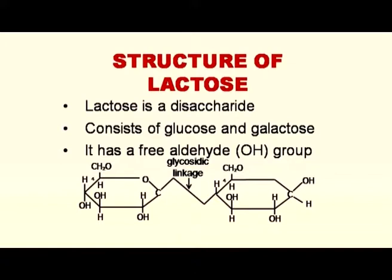As far as lactose structure is concerned, lactose is a disaccharide, meaning it is produced by the reaction of two monosaccharides or hexoses, which are glucose and galactose. They are linked together to form lactose. It has a free aldehyde group at the first carbon of glucose, and because of that it reacts with Fehling's solution, which is the method to determine lactose in milk and milk products.